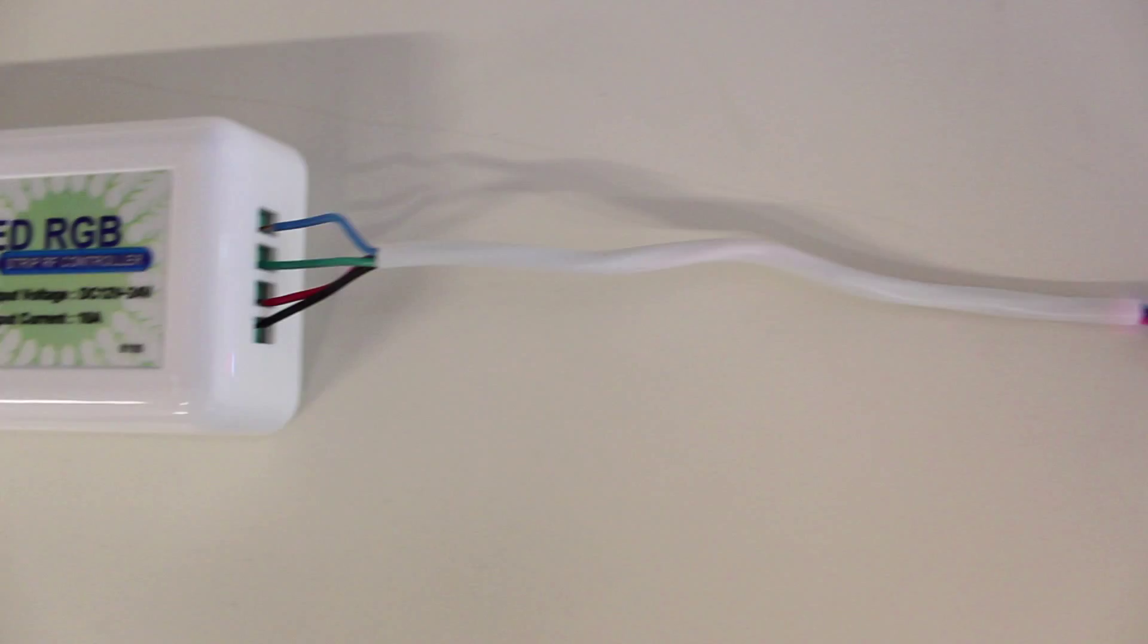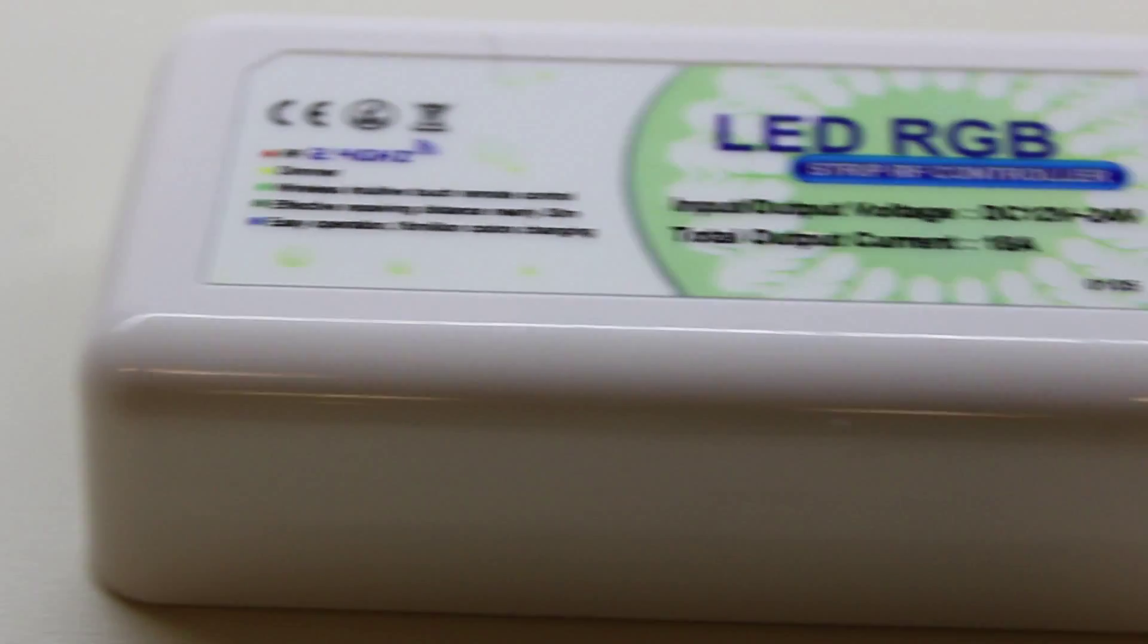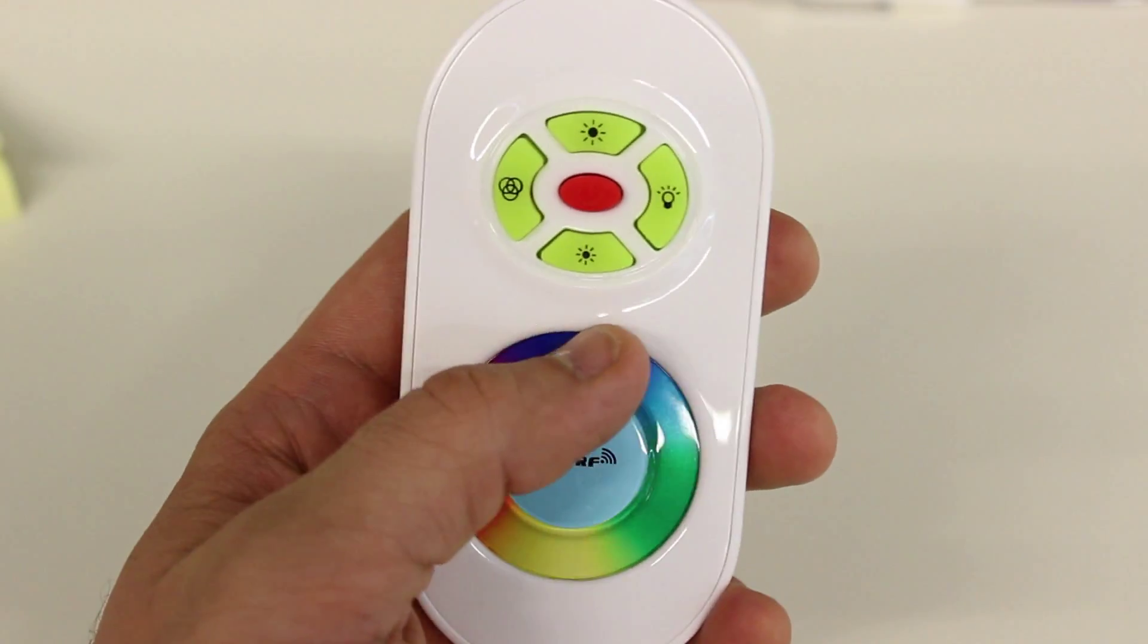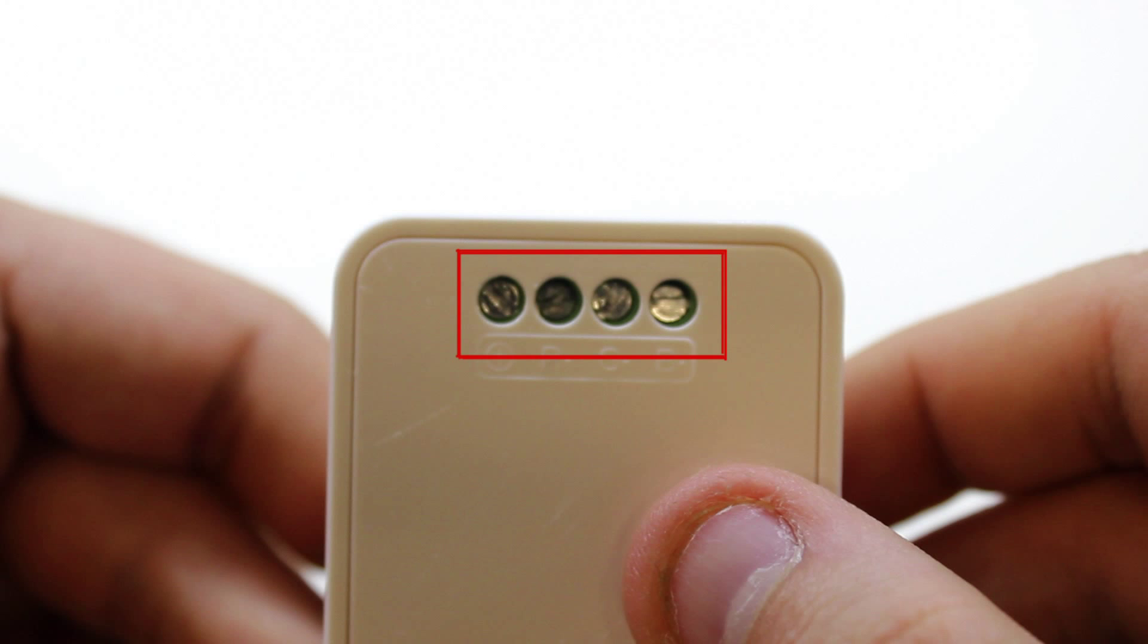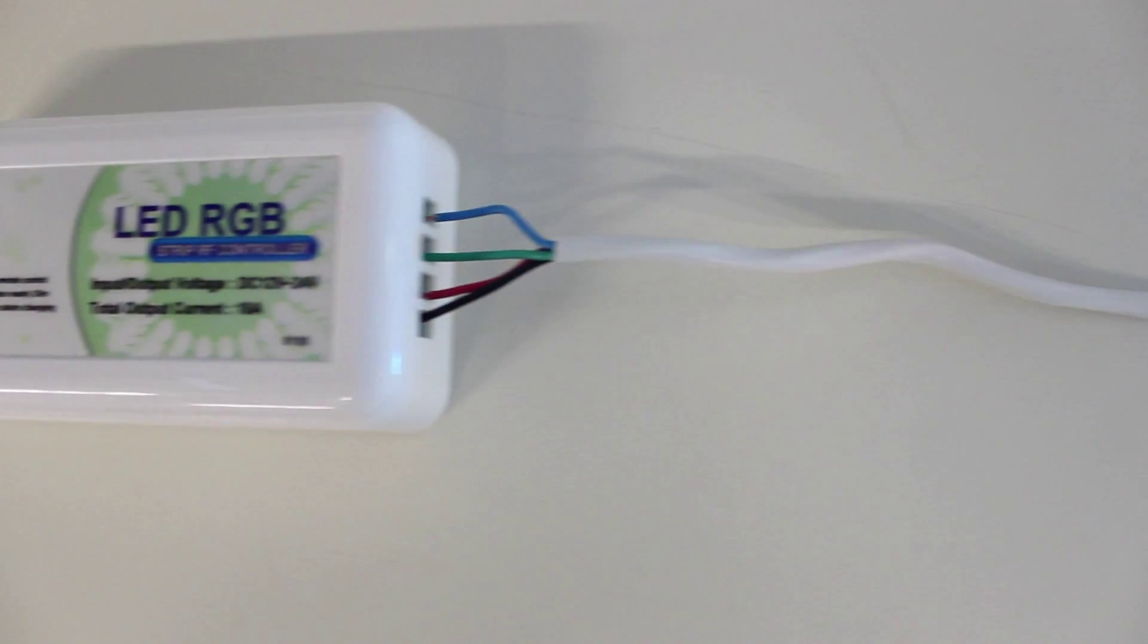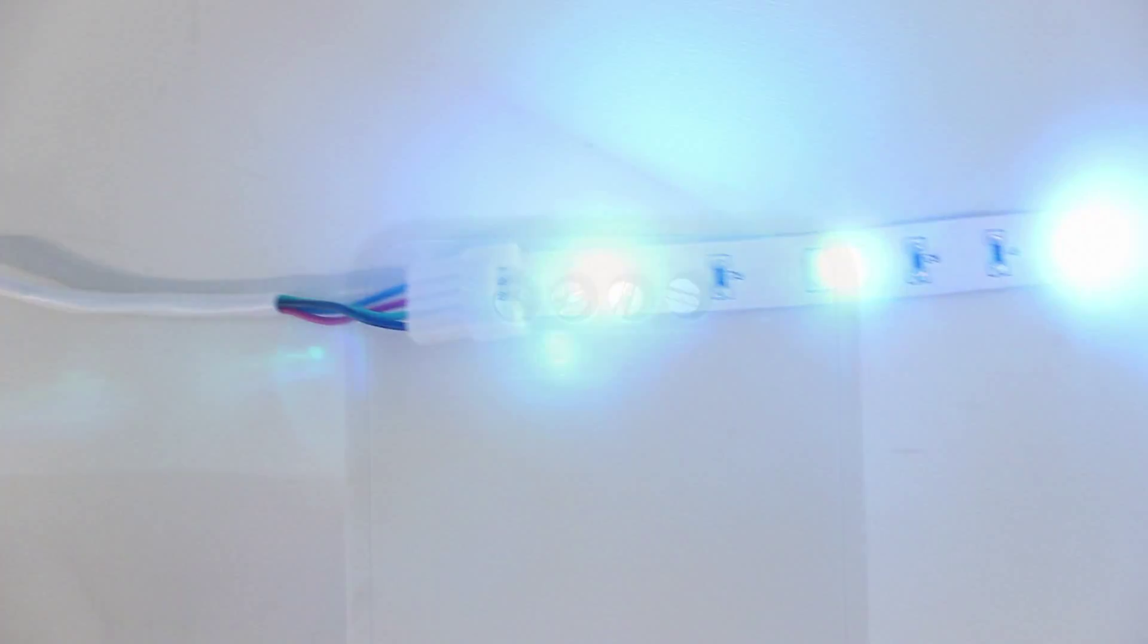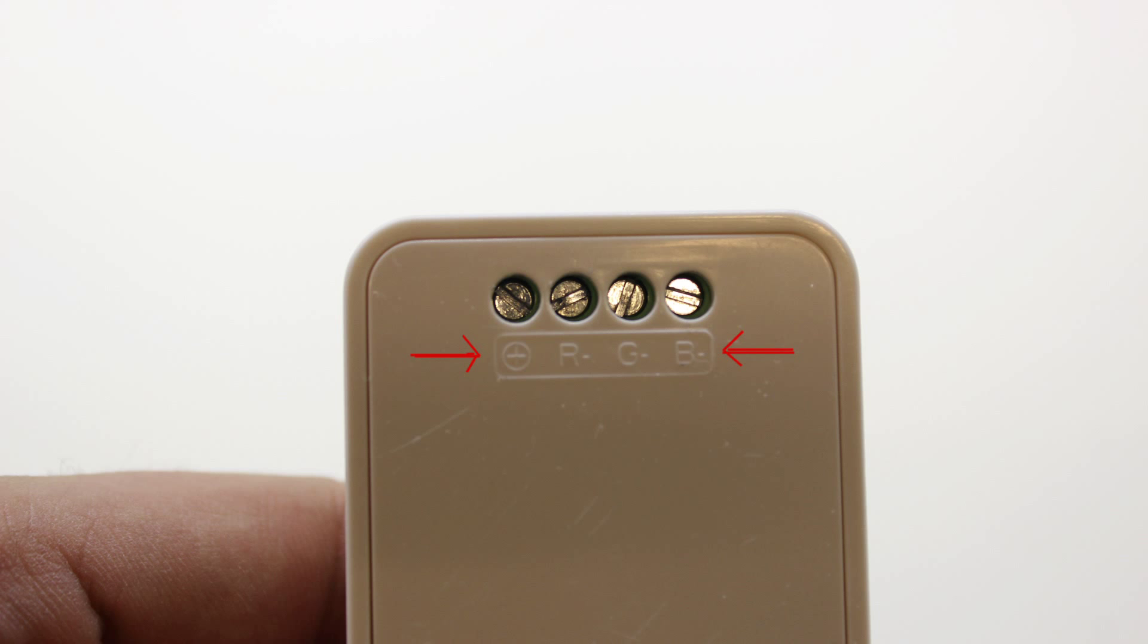Now that we have gone through how to connectorize and terminate our flexible RGB strip, we will move on to how to tie it into an RGB controller to create a fully functioning system. The controller that we most often use is an RF controller with a handheld remote. Starting with the controller, you will notice that there are screw terminals on both sides of the device. The four screw terminals indicates your RGB output. These terminals are what's going to send the signal to your flexible RGB strip. You'll notice that there is a rectangular box that labels each output terminal. They are a little difficult to see, but if you look closely you will see a plus for the positive, an R for the red, a G for the green, and a B for the blue.